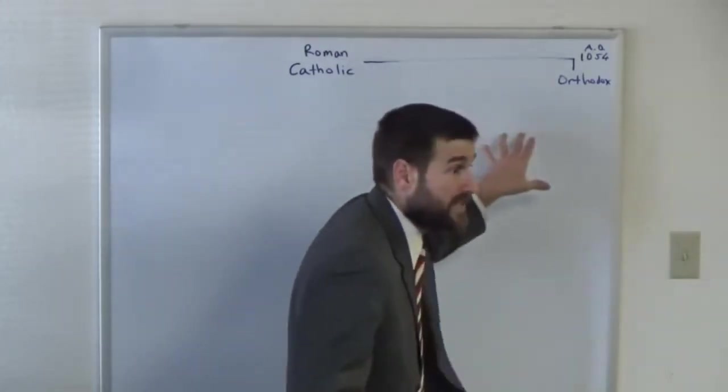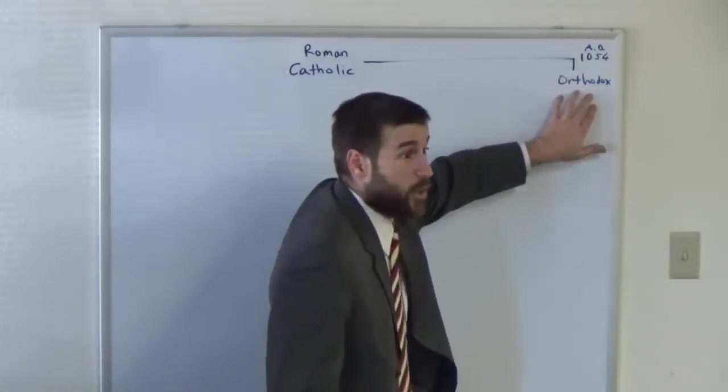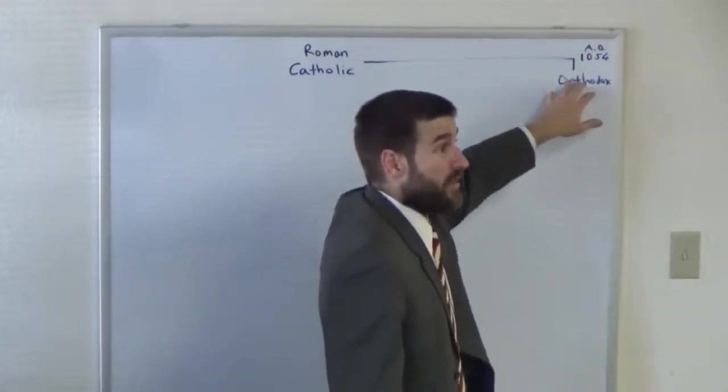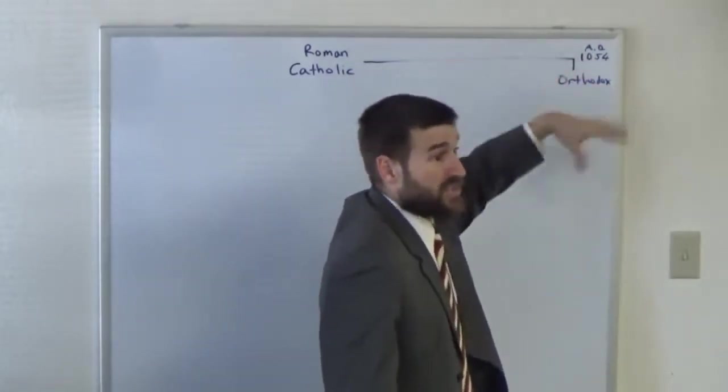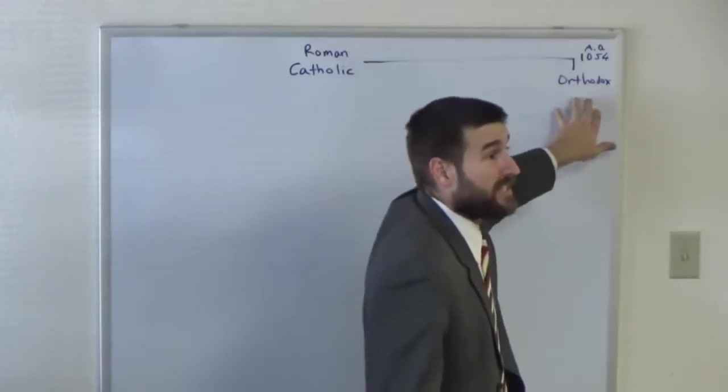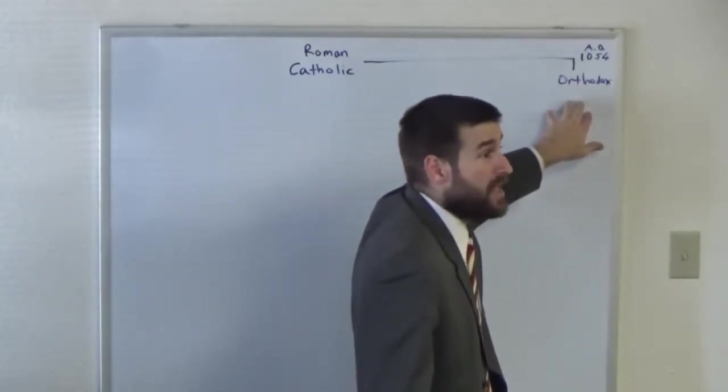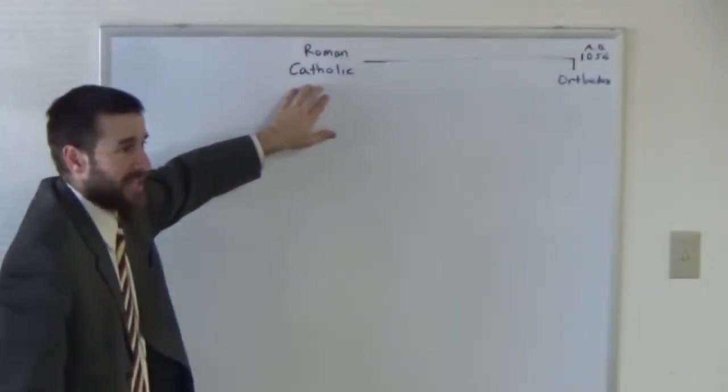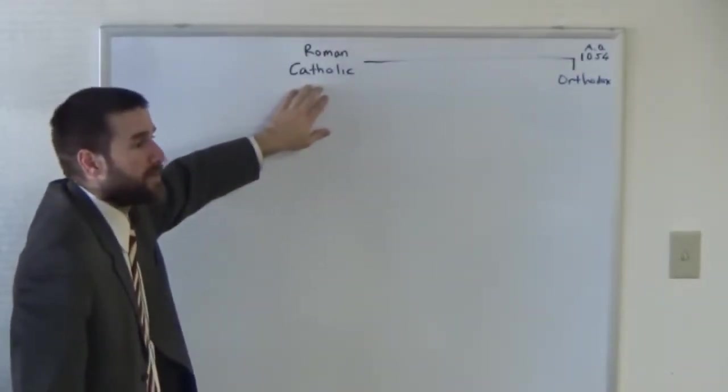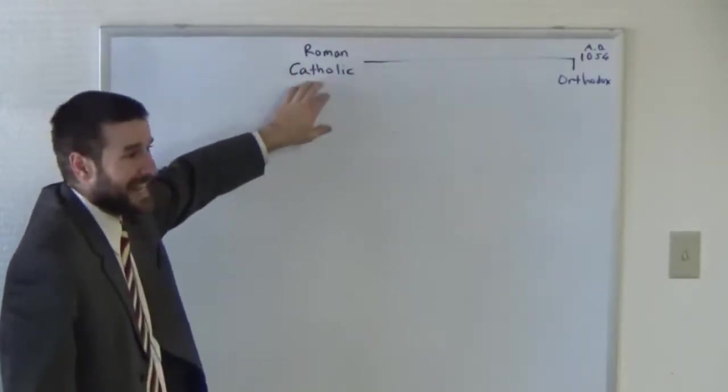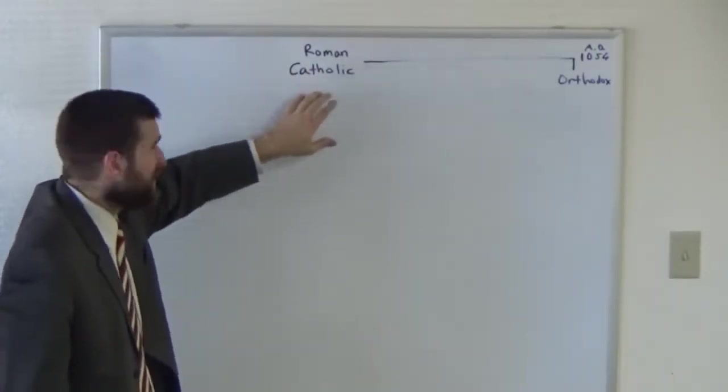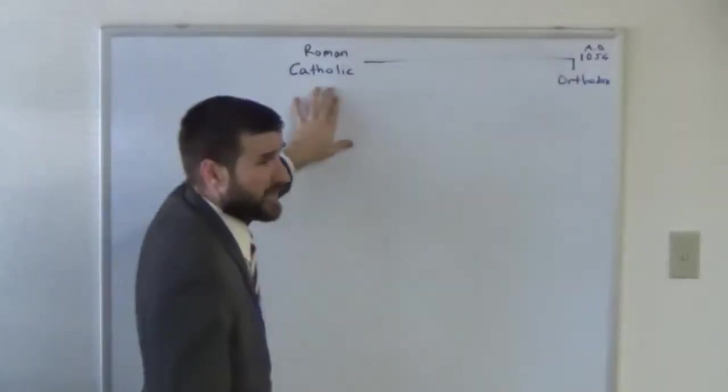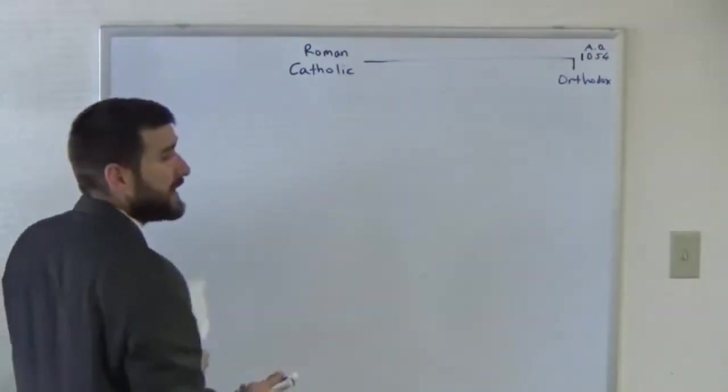Now one thing that this group over here has going for them is the right Bible. The Orthodox believers of Romania, Russia, Greece, whatever, they actually have a Textus Receptus-based Bible, a preserved Bible that's passed down. Whereas these people over here, the Roman Catholics, they have their own corrupt Bible. This is your Vaticanus and Sinaiticus crowd, and this is where the NIV and every new version comes from.